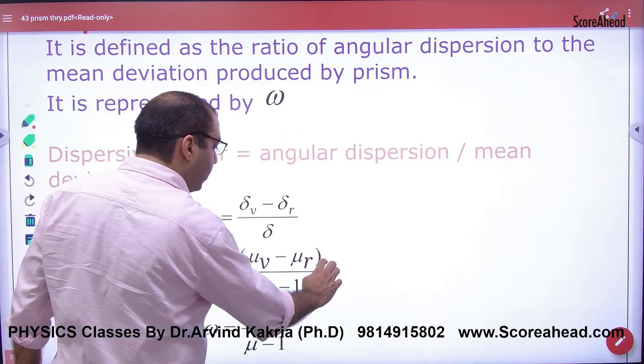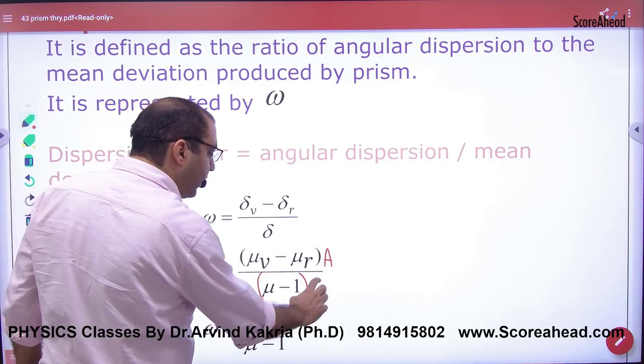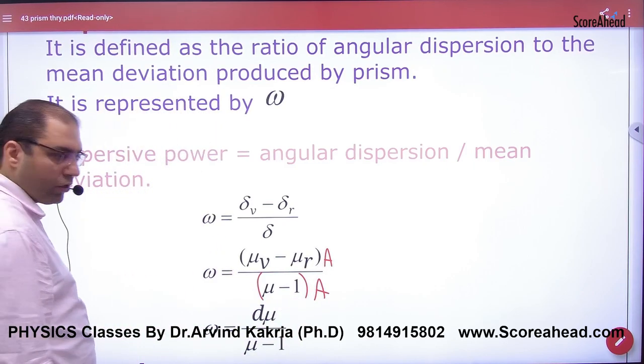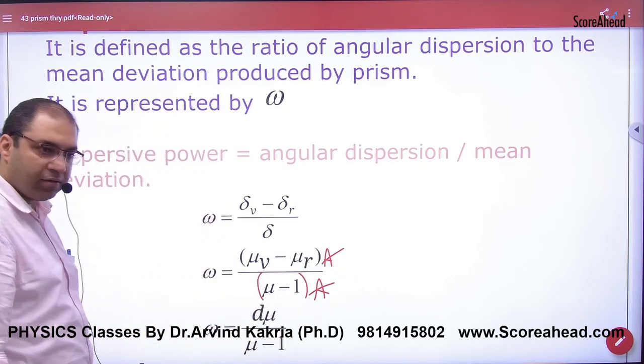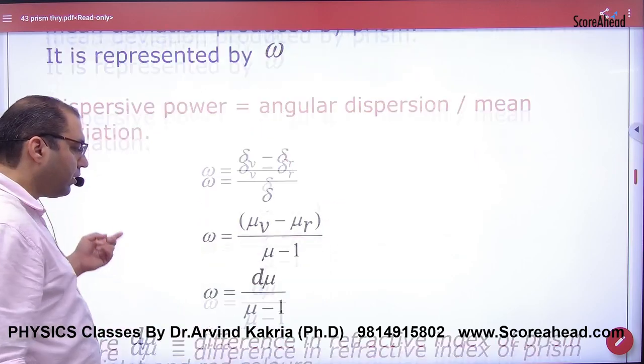You put the result here: delta is μ minus 1 into A. So what happened? A cancels. The answer is δμ by μ minus 1.